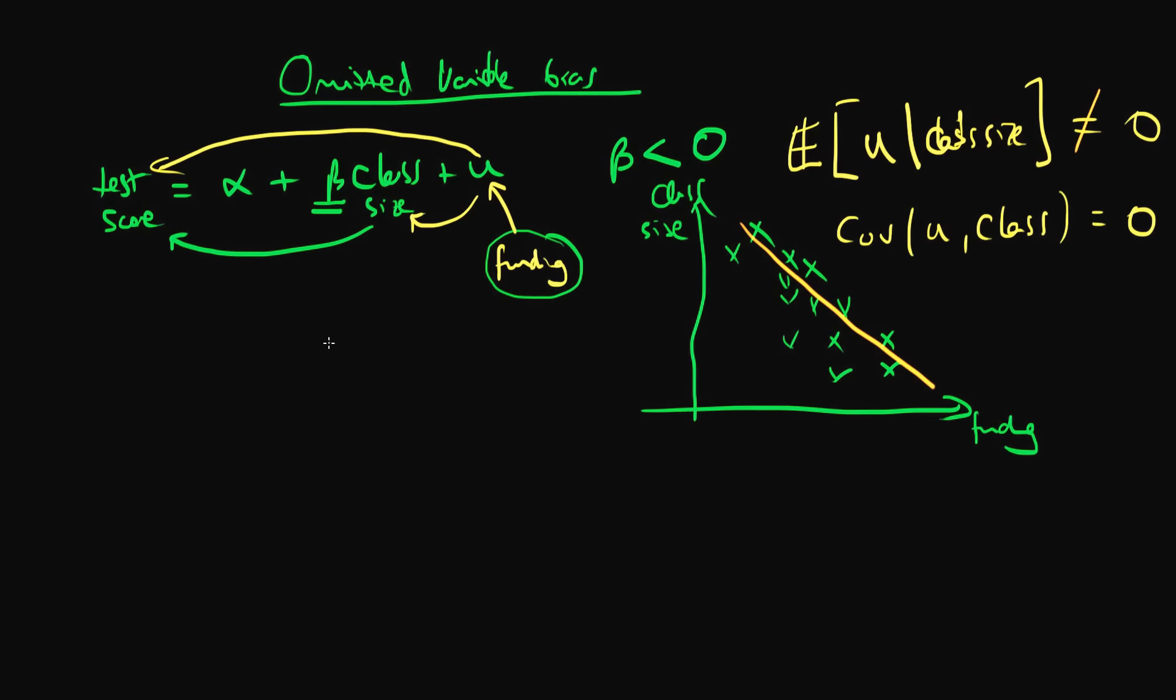So what does this mean for us? Well, it means that least squared estimates of beta, the population return to class size, is likely to be biased. So perhaps we use our least squared estimator and it outputs a value of minus 10.